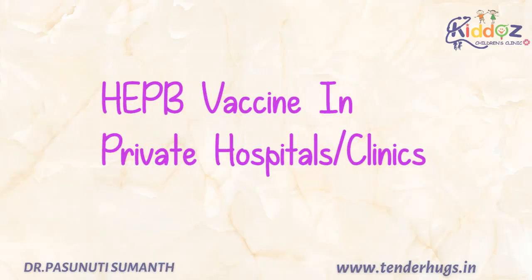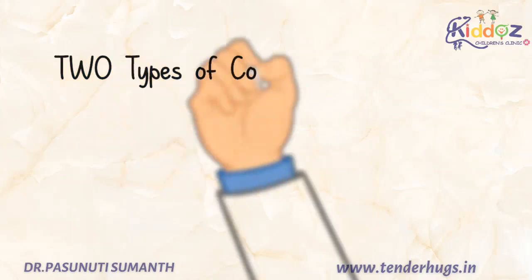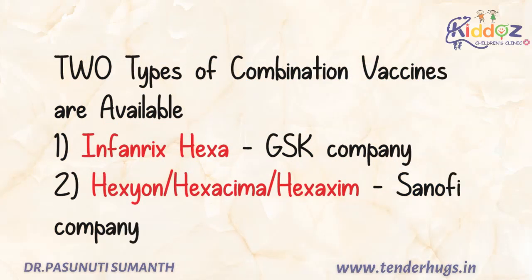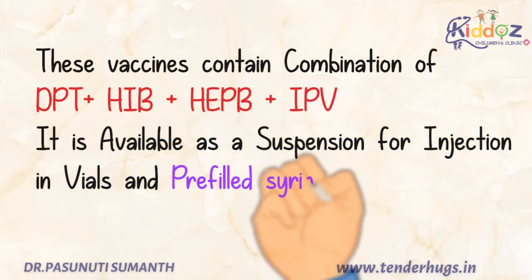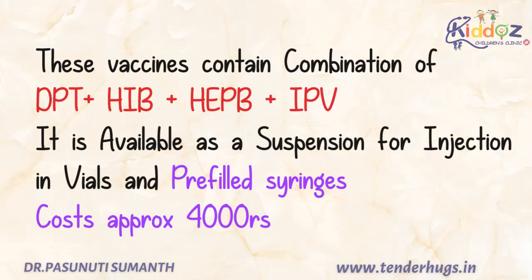In private hospitals and clinics, presently two types of combination vaccines are available. The first one is Infantrix Exa, and the second one is Exaxim. These vaccines contain a combination of DPT, Hemophilus influenza B vaccine, Hepatitis B vaccine, and injectable polio vaccine.